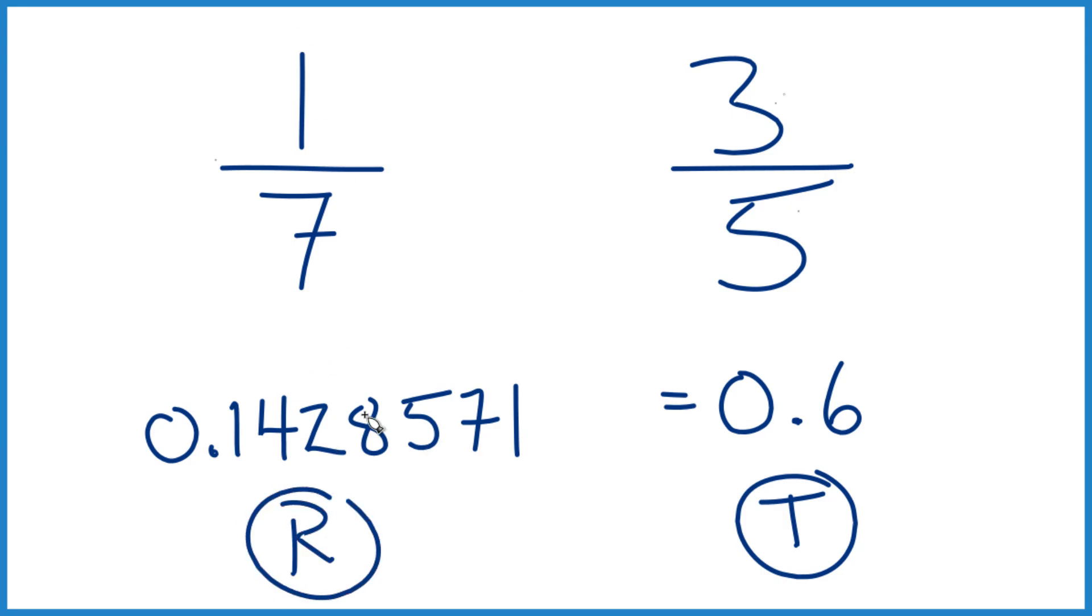So if you did the division longhand, eventually you'd see these numbers right here, they repeat. And then we start back out at 1 again, 1, 4, 2, 8, 5, 7, 1, 4, 2, 8, 5, 7. It just keeps going.